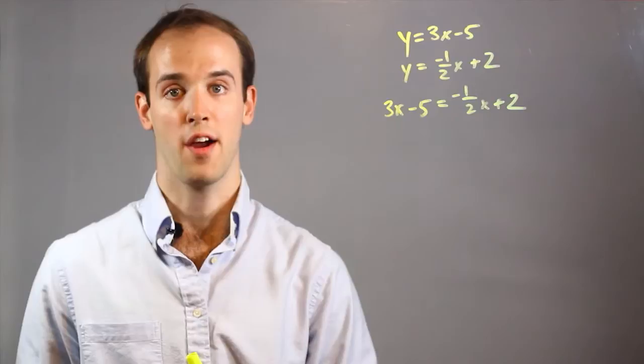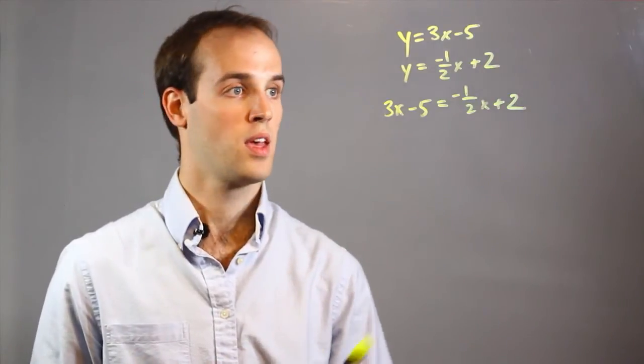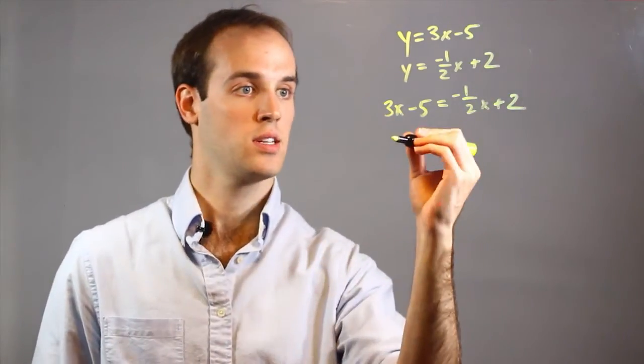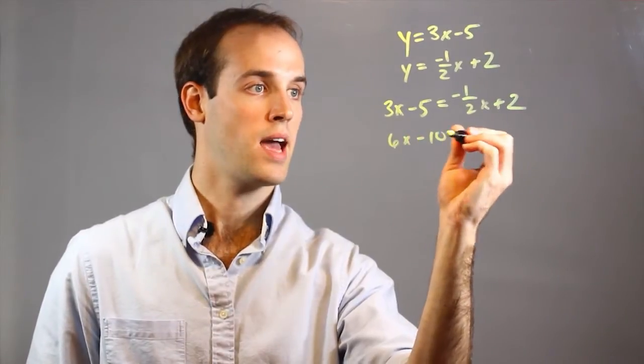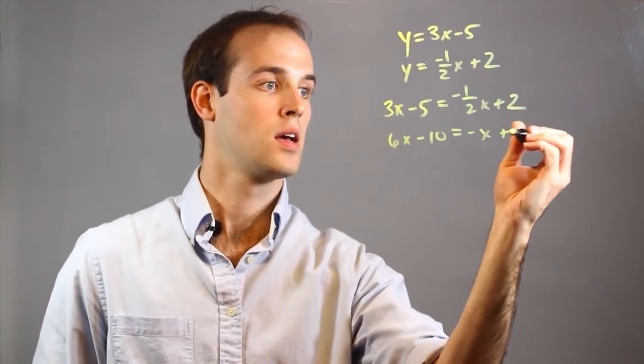And now you can see I have only one variable, which I can solve for. So I'm going to multiply everything by 2 to get rid of this fraction. 6x minus 10 equals negative x plus 4.